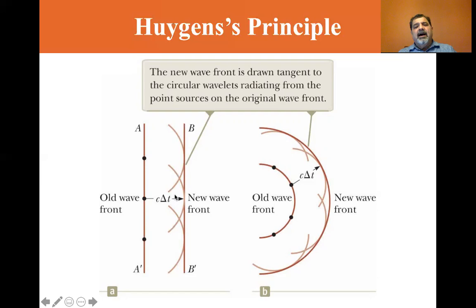And this wavefront, the new wavefront, is a distance of C delta T. The speed of light times the time will give you a new wavefront, the position of the new wavefront. So that's for a plane wave.